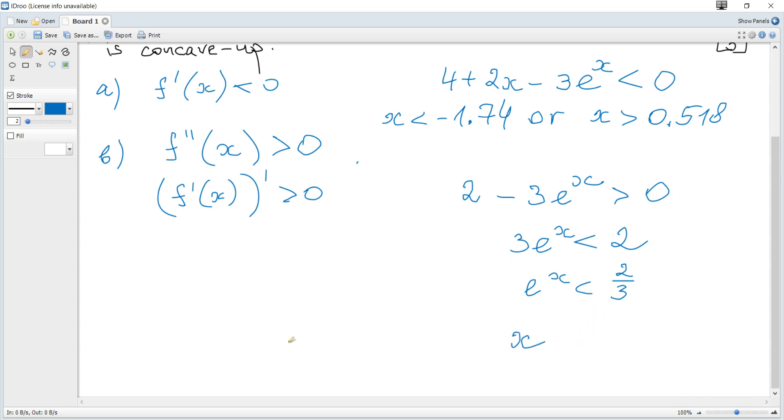To get x, using the property that ln(a^n) = n ln(a), we get x is less than ln of 2/3.